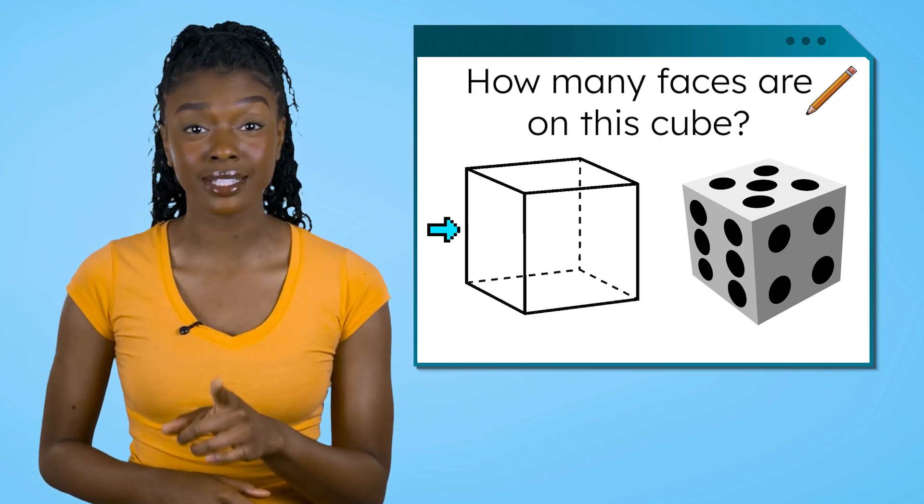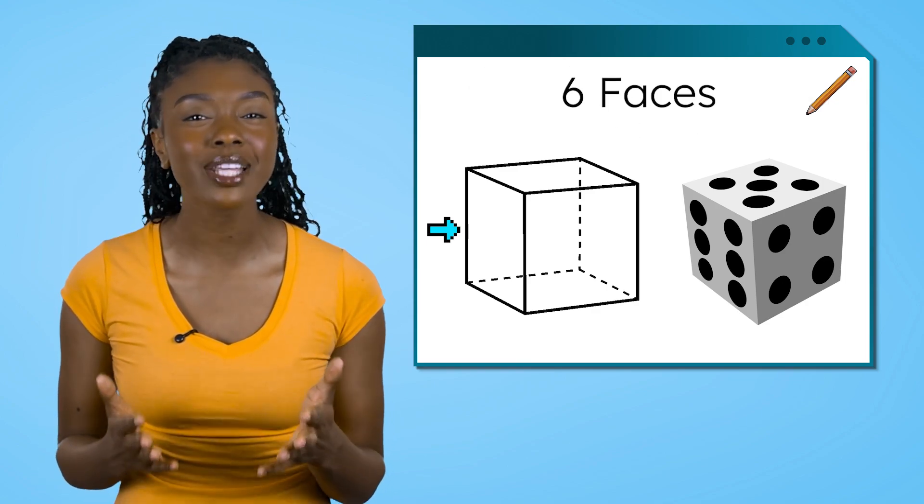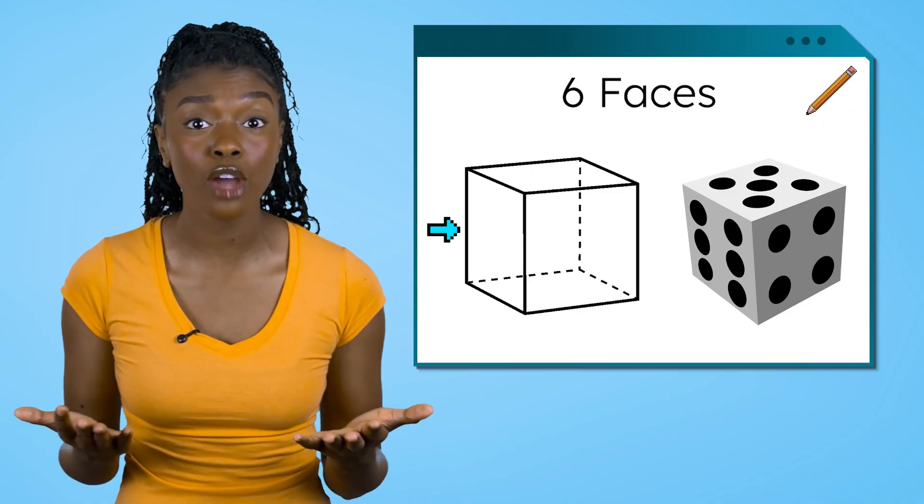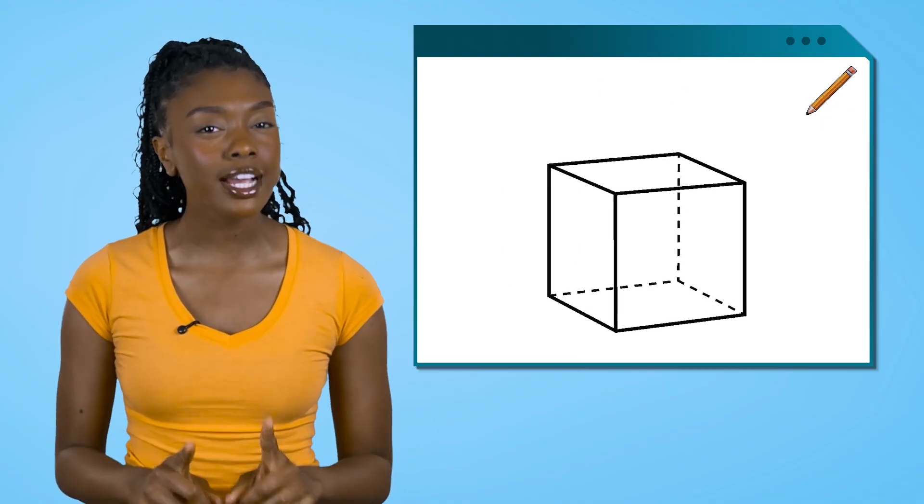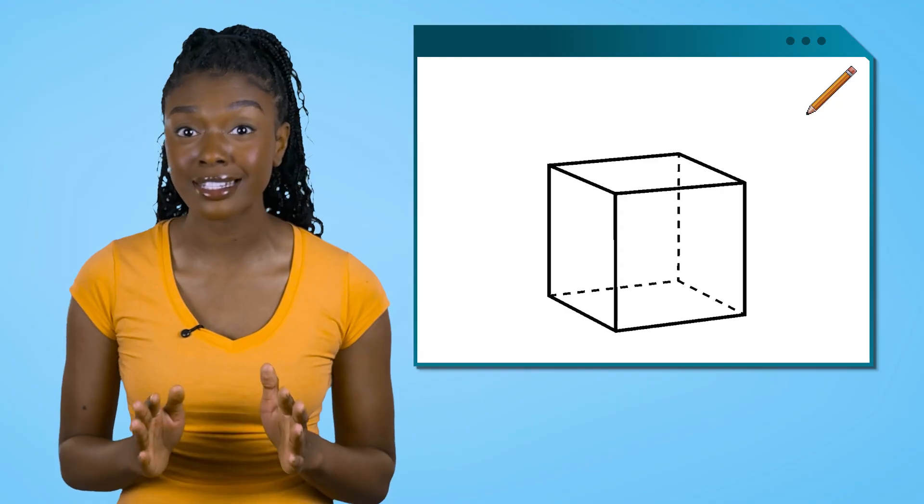If we compare the cube to dice, we can see that cubes have 6 faces, just like how you can roll a 1 through 6 when rolling dice. The next part of the cube we're going to look at is its edges.